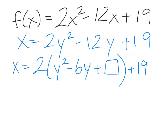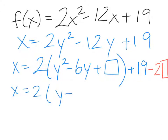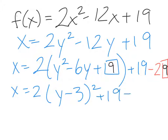Notice I'm adding 2 times a box value, so I have to subtract 2 times that same box from the same side — the line I just wrote is the same as the line above, except I've added 2 box and then subtracted 2 box. My next step: this becomes y minus 3 squared, because half of 6 gives me 3, and 3 squared is 9. So I put a 9 in the box, which gives me plus 19 minus 18. Now I've got x equals 2 times (y minus 3) squared plus 1.